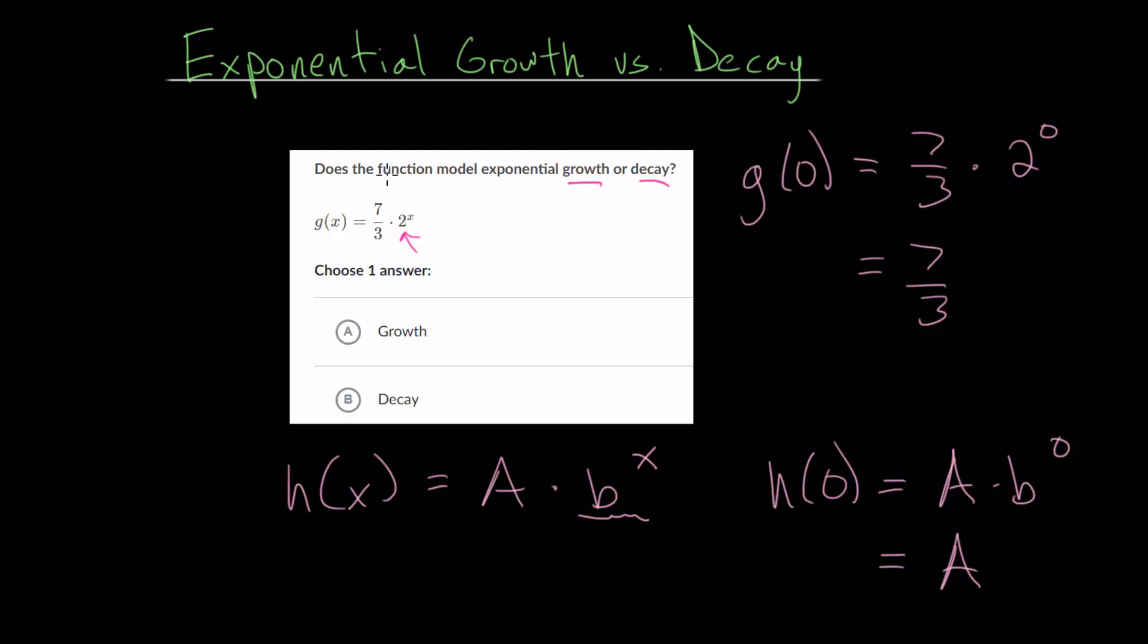So this 7 thirds is not going to affect whether it's growth or decay, or whatever the number is out in front. It doesn't affect whether the function will go up or whether it will go down moving forward. What matters for that is the base of the exponential expression. And in this case, it's a number greater than 1. If it was a fraction, that would be decay. But since it's bigger than 1, we're looking at growth here.